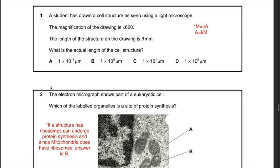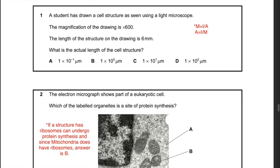Question 21: a student has drawn a cell structure using a light microscope at magnification 600. The length of the structure on the drawing is 6 millimeters. What is the actual length? Since the answers are in micrometers, convert 6 mm to 6000 micrometers. Substituting into the formula — magnification = image size ÷ actual size — actual size = 6000 ÷ 600 = 10 micrometers, or 1 × 10¹ micrometers. The answer is C.